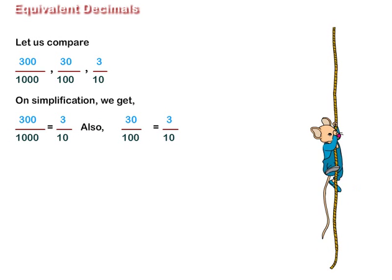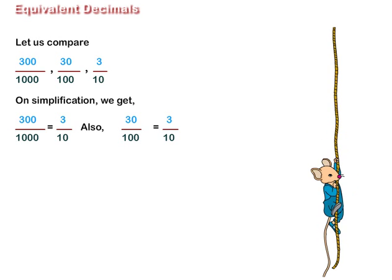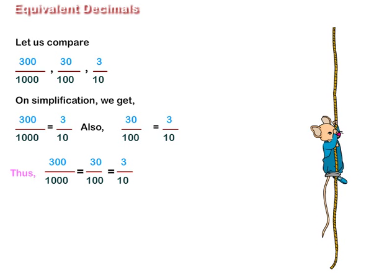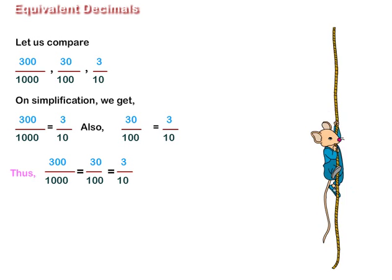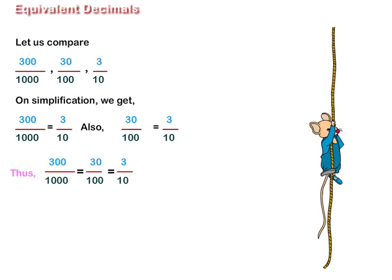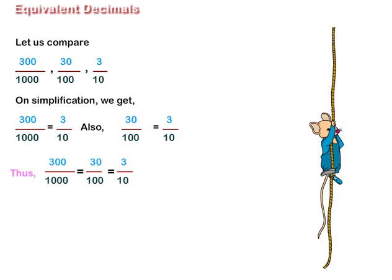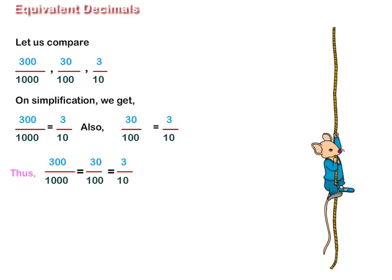Also, 30 upon 100 is equal to 3 upon 10. Thus, we see that 300 upon 1000 is equal to 30 upon 100, which is equal to 3 upon 10. Or we can say that they are equivalent fractions.